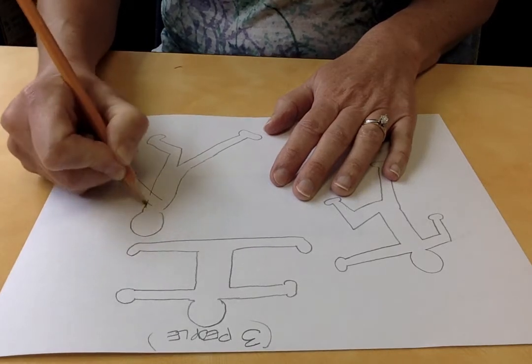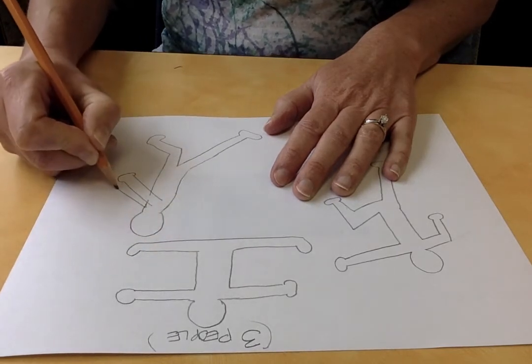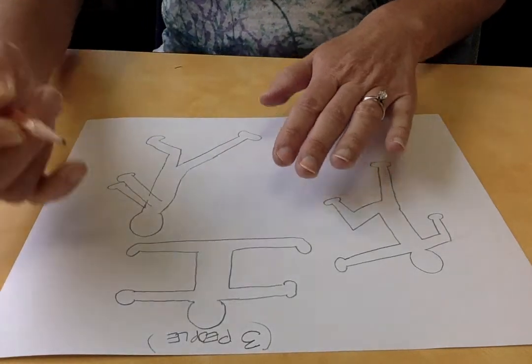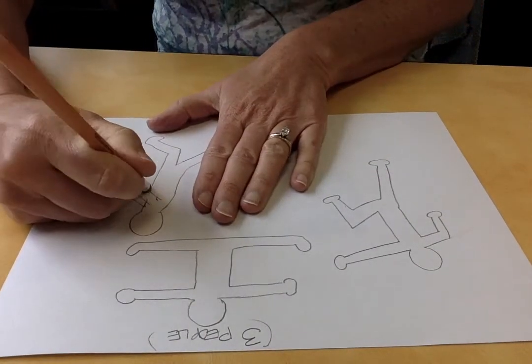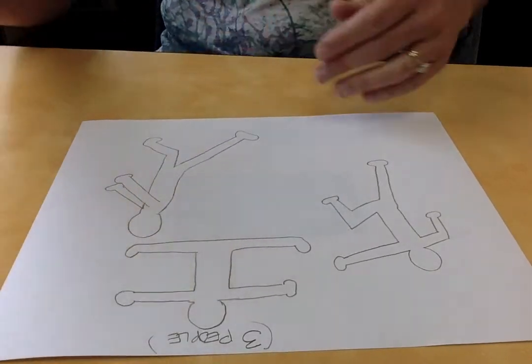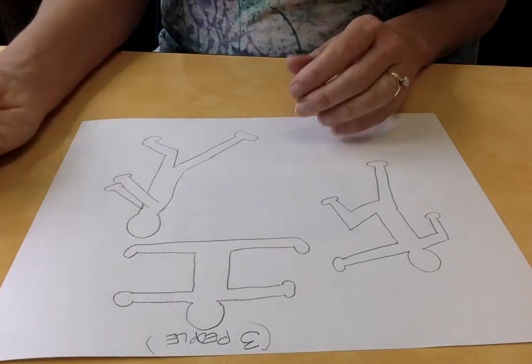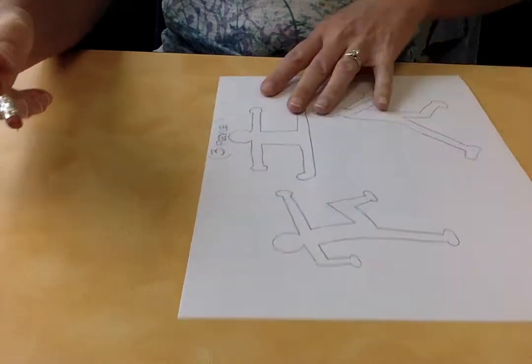There's my head, and then my other arm is back here. I think I have a picture of my nephew playing soccer and he looks kind of like that, kicking the ball. Okay, so now I have my three people.